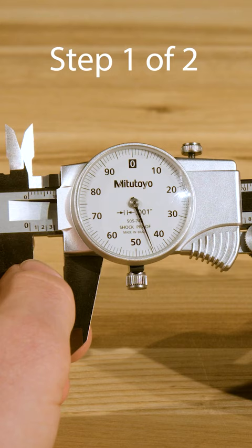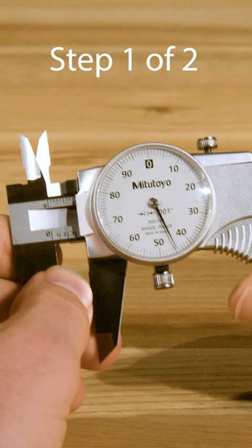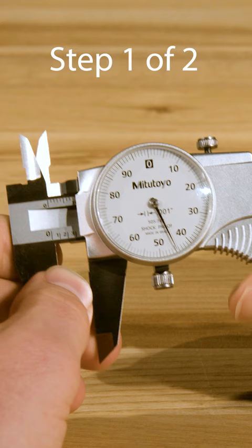If there's confusion about whether or not a graduation has been passed, note that the value on the dial increases as the caliper opens. So if the value is high then the graduation has not yet been passed, and if the value is low it has just been passed.